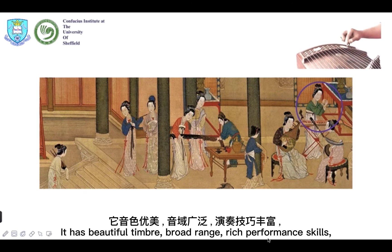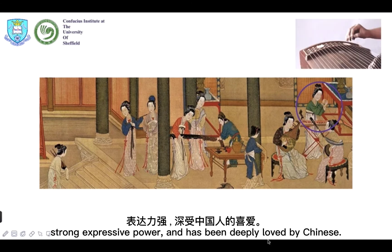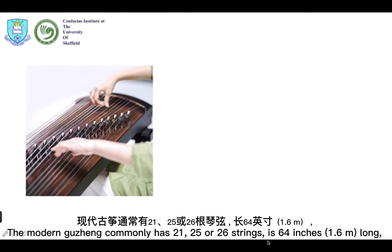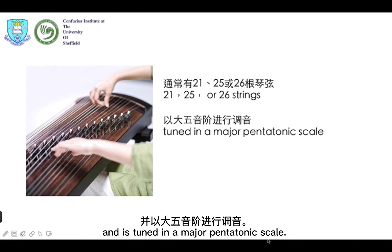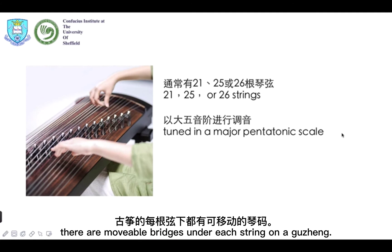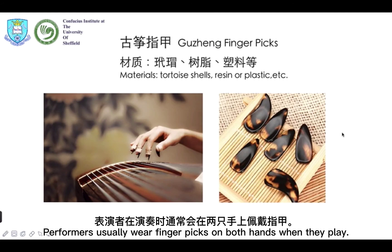It has beautiful timbre, broad range, rich performance scales, and strong expressive power, and has been deeply loved by the Chinese. The modern gu zheng commonly has 21, 25 or 26 strings. It is 64 inches long and is tuned in a major pentatonic scale. Different from the gu qin, there are movable bridges under each string on the gu zheng. Performers usually wear finger picks on both hands when they play, made of materials similar to paper finger picks.